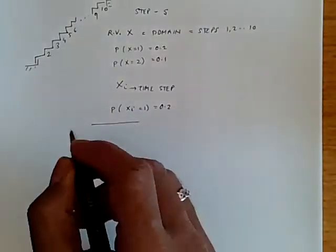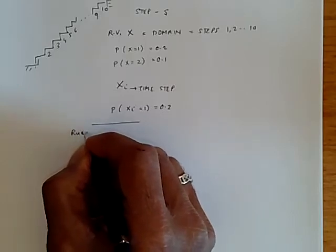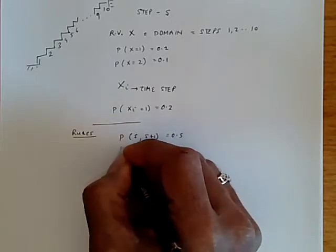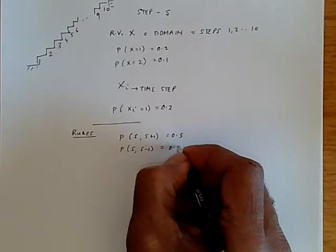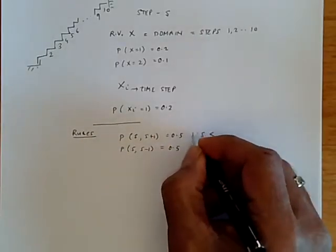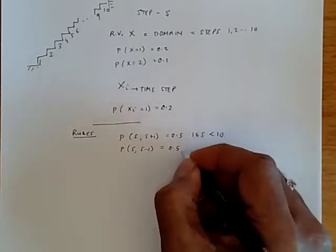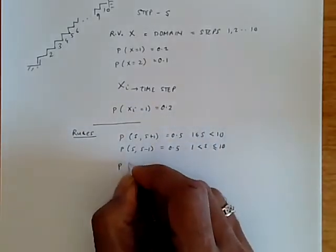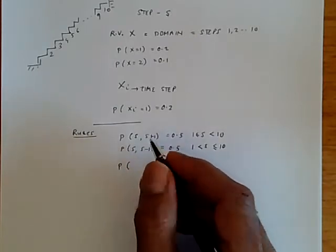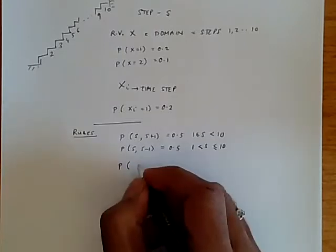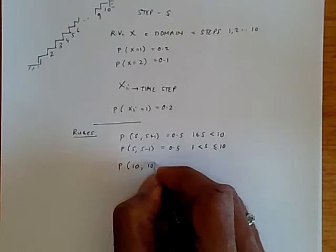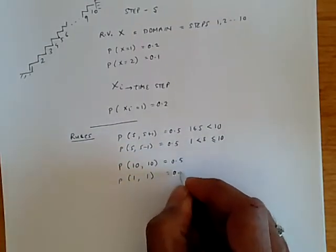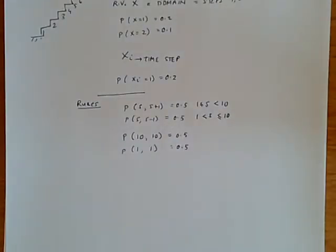So now we can say a little bit more about the rules. The probability of going from step s to step s plus one equals 0.5. The probability of going from s to s minus one equals 0.5. And this is going to be true for 1 less than or equal to s less than 10, and s to s minus one for one less than s less than or equal to 10. And so the probability of being at 10 to go to 10 again is equal to 0.5. And probability of being at 1, you stay at 1 with probability 0.5. So you have some boundary conditions so that you don't run out of steps over here.